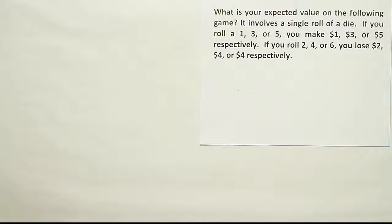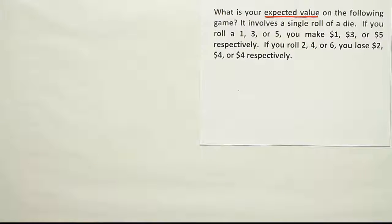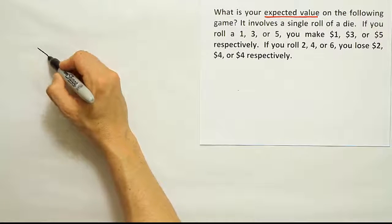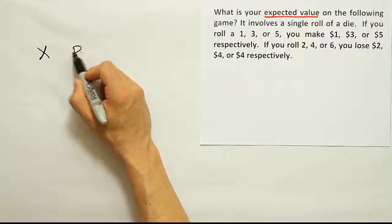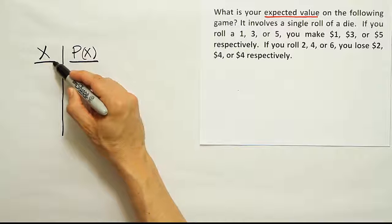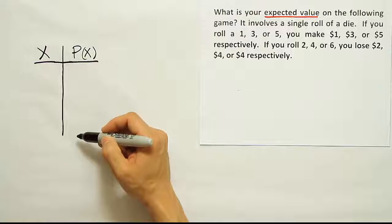So this is an expected value problem — that's pretty clear from the question. We're going to assume that you are rolling the die to play the game, looking to find the ultimate average value you're expecting to make. For all expected value problems, the best idea is to create a table with an x value column and a probability of x column — listing the outcome in dollar amount and the probability that outcome occurs.